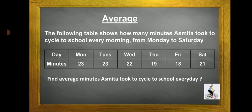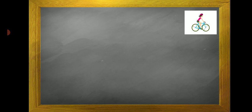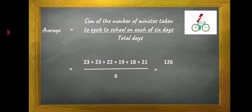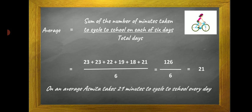To find the average minutes, first we will add all the number of minutes taken to cycle to school each of six days, then divide the total by total number of days. Therefore, average is equal to sum of the number of minutes taken to cycle to school on each of six days upon total days, which is equal to 23 plus 23 plus 22 plus 19 plus 18 plus 21 divided by 6. So we get 126 divided by 6, which is equal to 21.